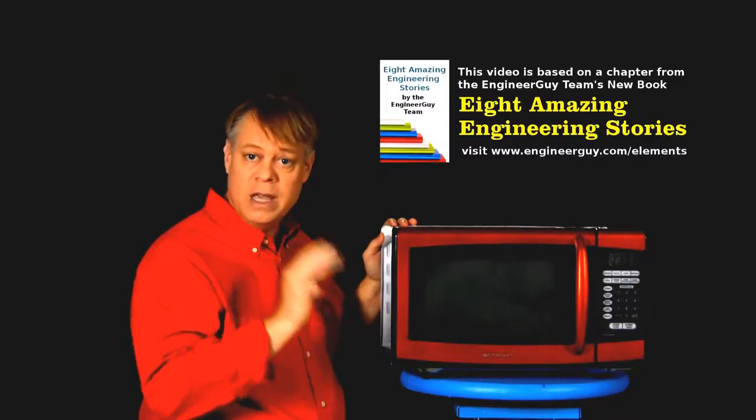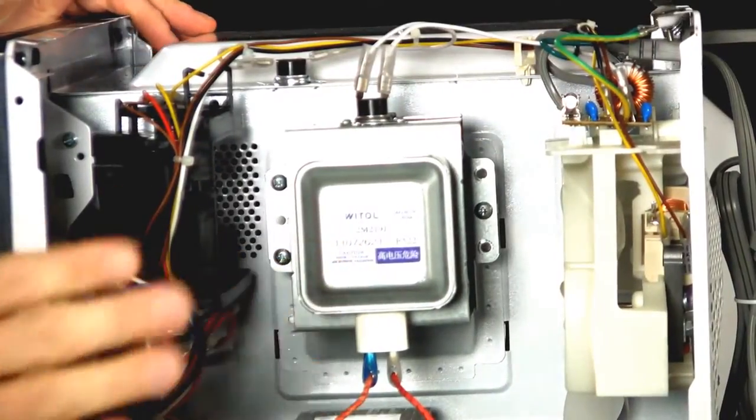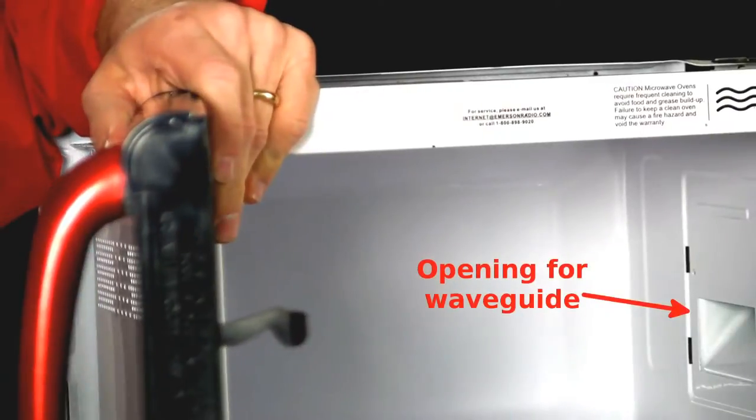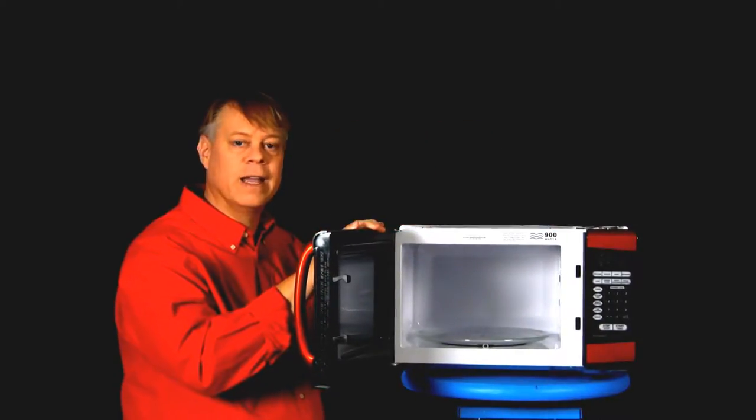A microwave contains three main components: a vacuum tube called a magnetron that generates the energy that heats food, a waveguide hidden in the wall to direct that energy to the food, and a chamber to hold the food and safely contain the microwave radiation.